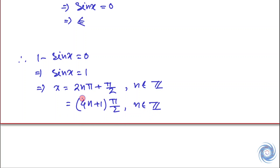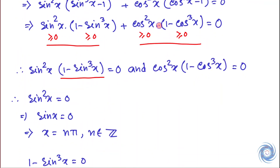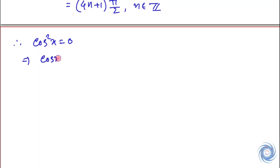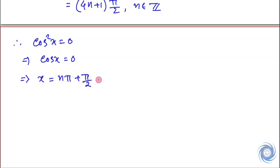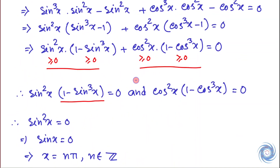Now let us take the second part. We will calculate from the equation cos²x times (1 − cos³x) = 0. So we have either cos²x equals zero, giving cos x equals 0, and therefore x = nπ/2 where n belongs to ℤ. Or, we take the second factor: 1 minus cos³x equals zero.